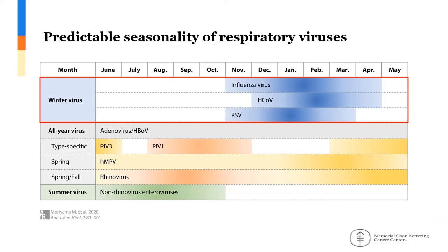There is a predictable seasonality of respiratory viruses, though some have started showing up unexpectedly. Shown here is a schematic of the seasonality of respiratory virus infections in temperate regions. Seasonal factors like temperature and humidity influence the host airway immune response and affect the viability and transmission of respiratory viruses. Since we are in the fall and winter is approaching, we will see a peak in influenza and RSV infections. For the purpose of this talk, I'll be focusing mostly on these two viruses and how we diagnose them.